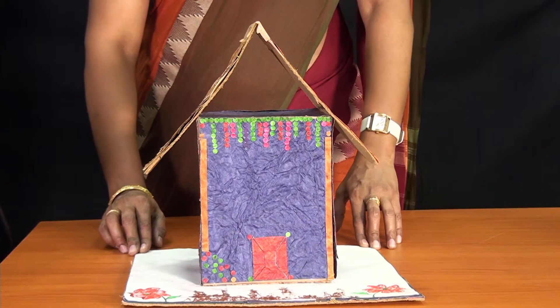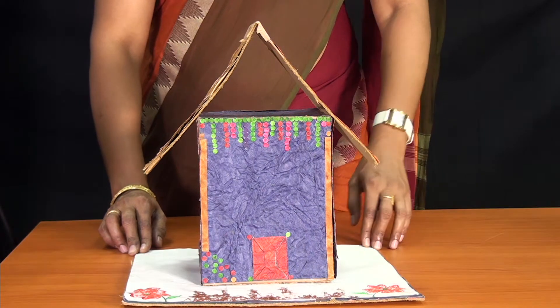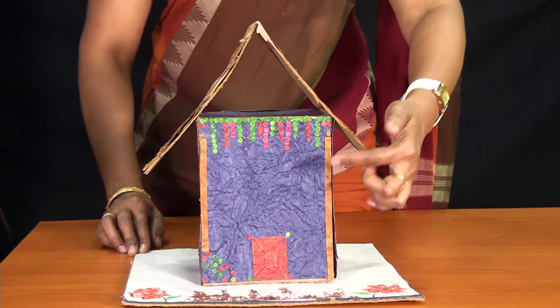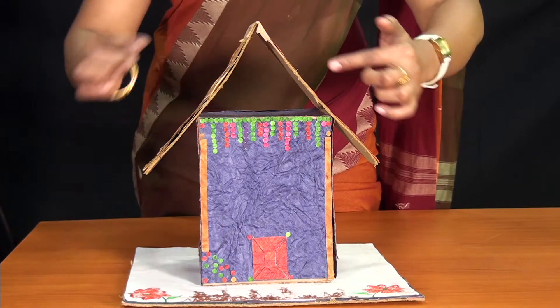The front view - when we see the object from the front, only the front part comes in the view. In our hut, we can see the door, the front wall, and the outline of the roof.